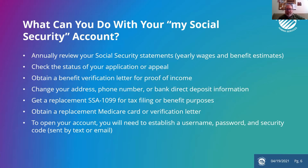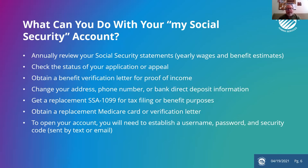You can check the status of an application or an appeal of a disability ruling. You can get a verification letter for proof of income — a lot of situations where you need to show what your social security income is, you can print those out from the website. You can make a change of address, phone number, or bank direct deposit information. You can get a replacement 1099 for tax filing or benefit purposes — we ask for these a lot for clients if we're doing the property tax exemption at the county, as we can go back three years on setting up those exemptions. You can also get a replacement Medicare card or verification letter of Medicare coverage.